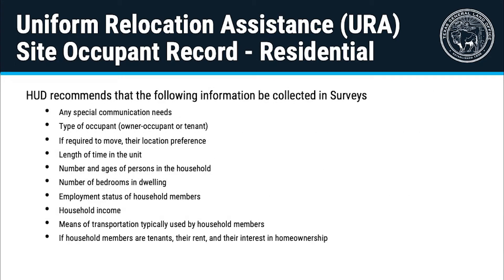HUD recommends that the following information be collected in surveys: any special communication needs, type of occupant (owner-occupant or tenant), if required to move their location preference, length of time in the unit, number and ages of persons in the household, number of bedrooms in the dwelling, employment status of household members, household income, means of transportation typically used by household members, and if household members are tenants, their rent and their interest in homeownership.